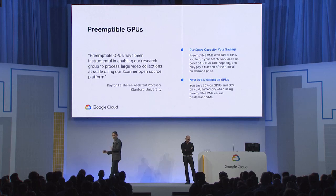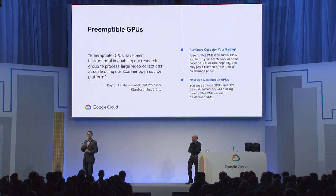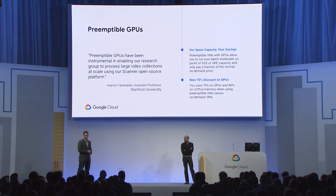On the flip side, if you don't need answers right away but want to maximize compute, we offer preemptible GPUs — ideal for batch workloads. This uses our excess capacity at up to 70% off on-demand GPU pricing. It's great for customers with a finite budget, like researchers at Stanford University, allowing them to maximize the amount of research they can accomplish — basically, doing more with less.